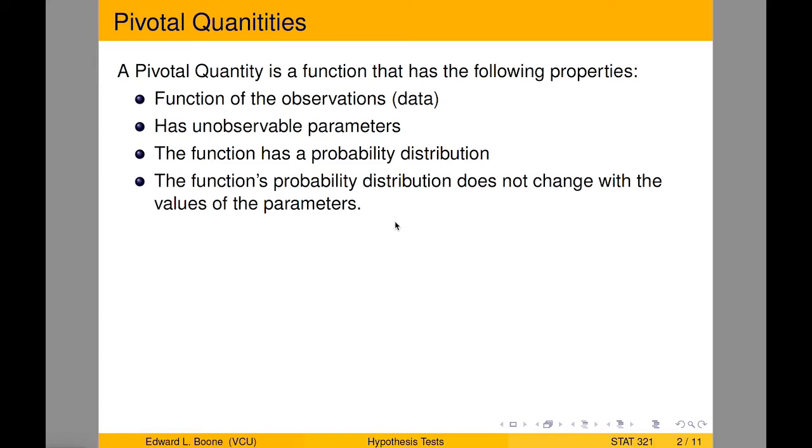The first thing we're going to need to do is come up with what's called a Pivotal Quantity. A Pivotal Quantity has the following properties. It's a function of our data, so we're going to need some data involved in this. It has some unobservable parameters, which ultimately we're going to try to make conclusions about. This function has a probability distribution, and the probability distribution does not change with the values of the parameter.